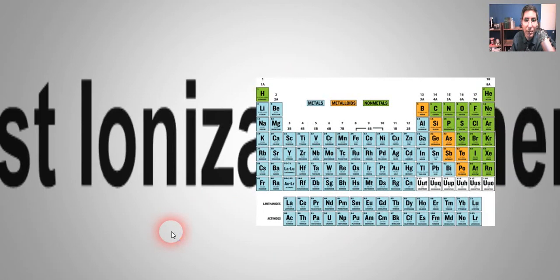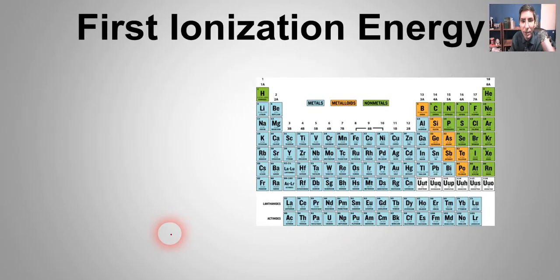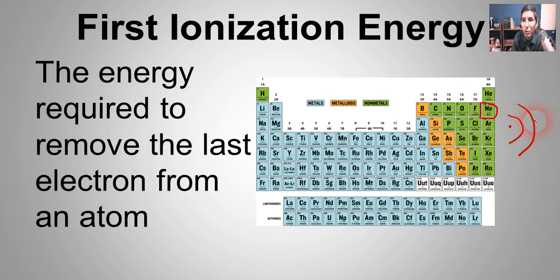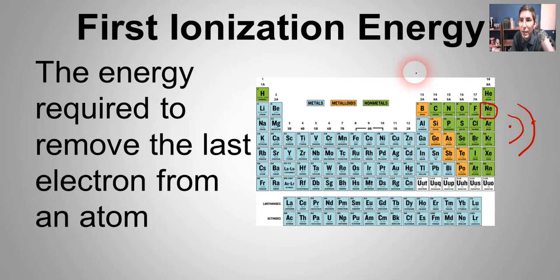Let's look at one more trend on the periodic table — first ionization energy. This is the energy required to remove the very last electron from an atom. If we think about neon as an example, it has two energy levels and we're talking about removing that very last p electron. It's going to require a whole lot of energy because it already has that stable octet — it's very difficult to remove an electron. So generally speaking, the ones on the right side are going to have a higher first ionization energy.